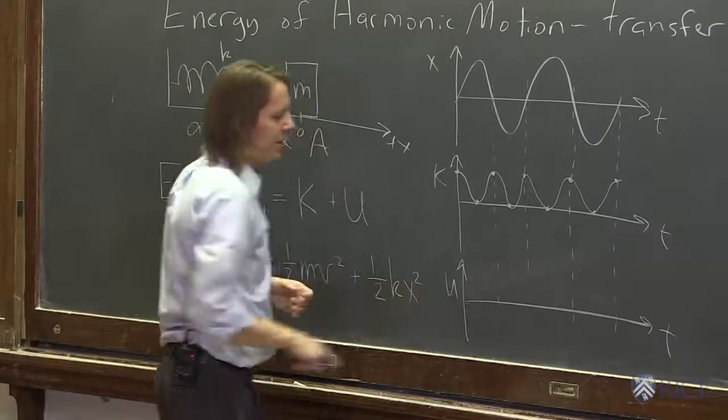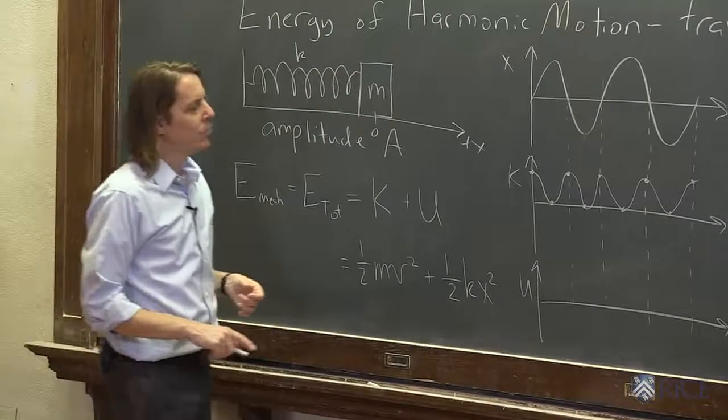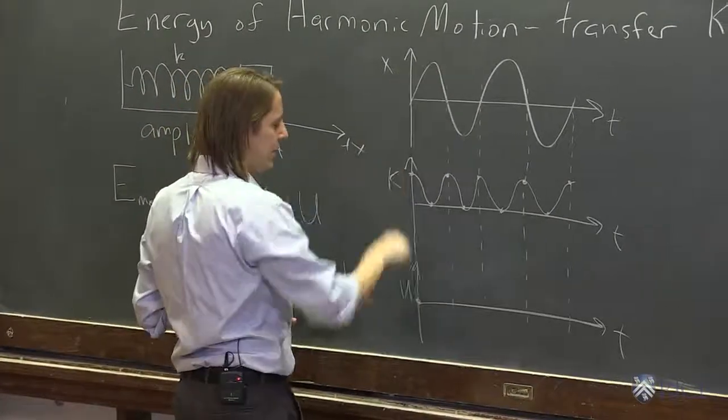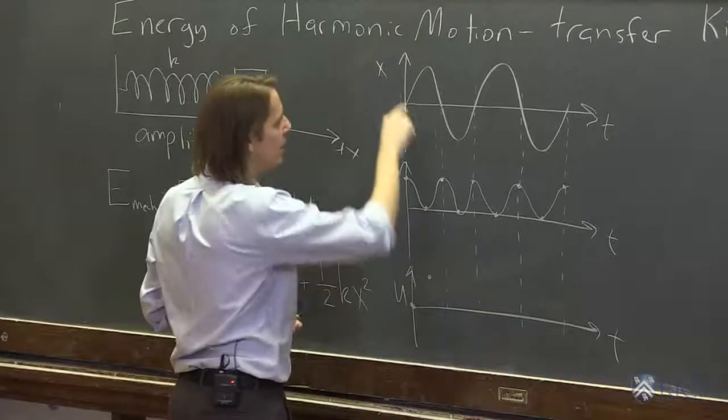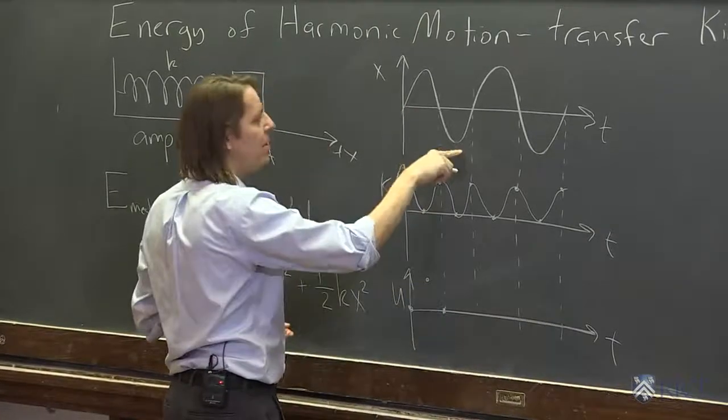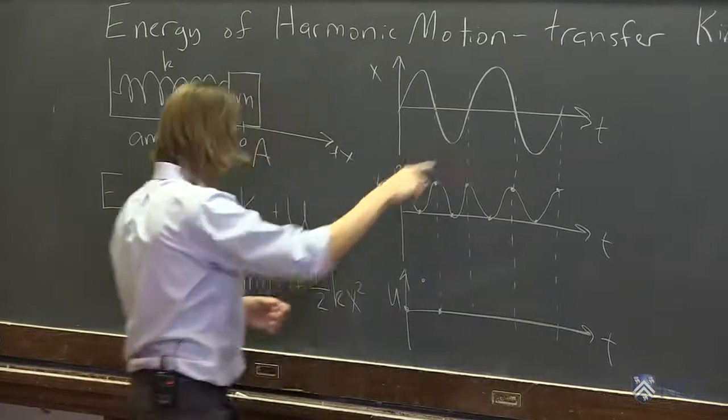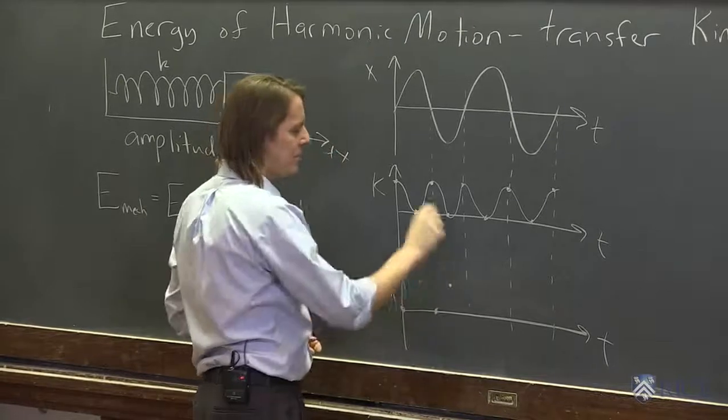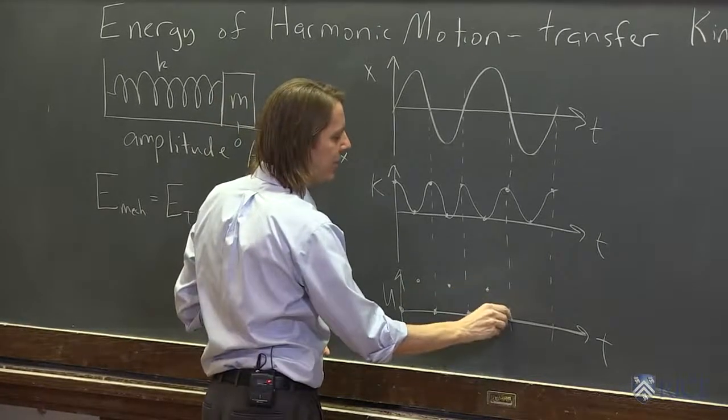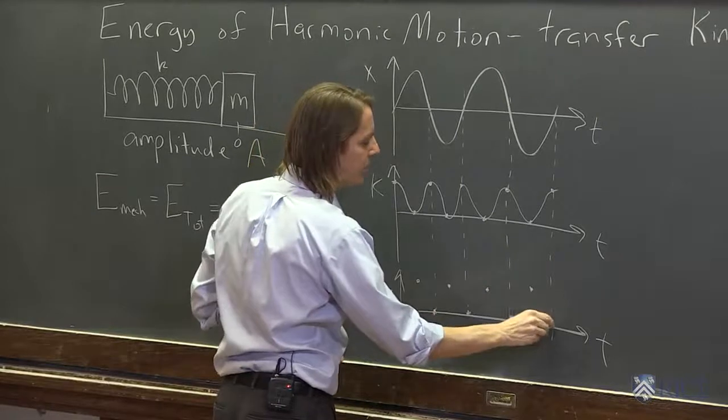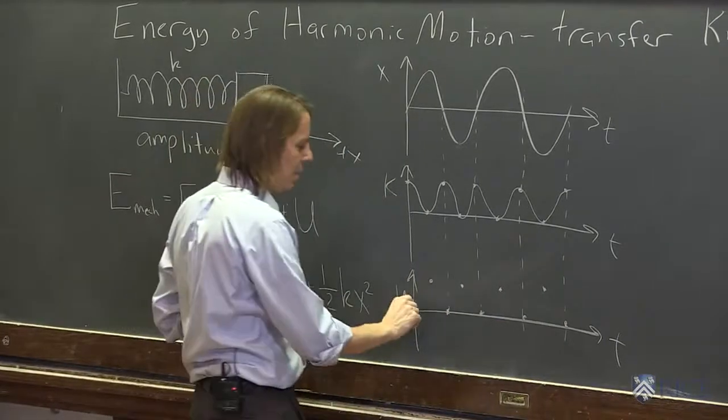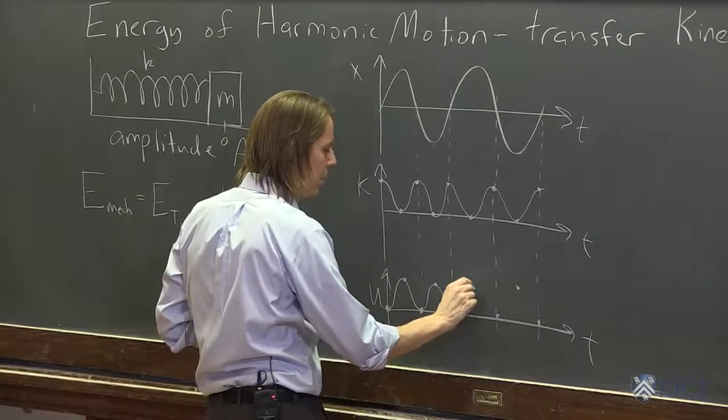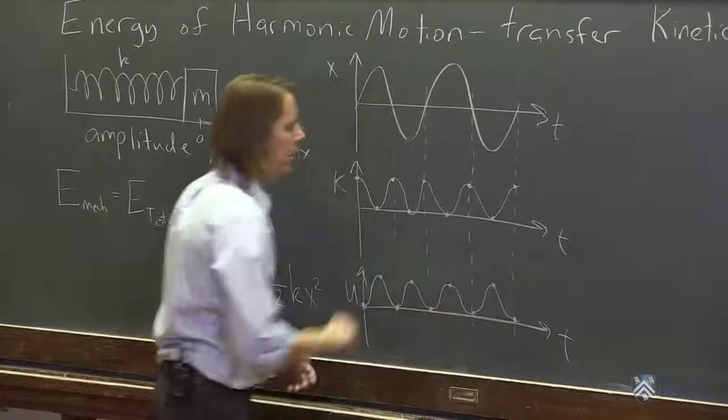We could look at the potential energy, one half kx squared. That's really going to follow x. Here it's zero, here it's zero. Here x gets really big, kx squared must get really big there. Here it must get zero. But then here x becomes negative, but it's one half kx squared, so you square the negative, it becomes positive. So potential energy never actually goes negative. You only get positive values because of the way we defined it for a spring.